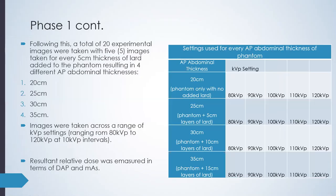Following the reference image, a total of 20 experimental images were taken, with five images taken for every five centimeter thickness of lard added to the phantom, resulting in four different AP abdominal thicknesses: 20 centimeters (phantom only), 25 centimeters (five layers of additional lard), 30, and 35 centimeters. The images were taken across a range of KVP settings from 80 to 120 KVP at 10 KVP intervals, and the resultant relative dose was measured in terms of DAP and MAS.